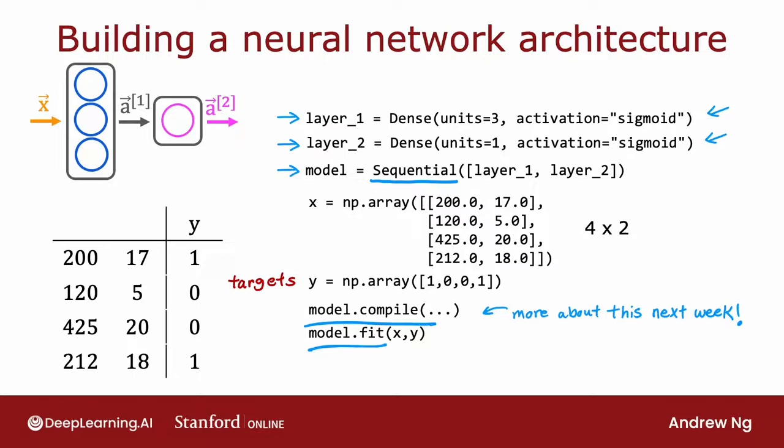And then finally, how do you do inference on this neural network? How do you do forward prop? If you have a new example, say x_new, which is np.array with these two features, then to carry out forward prop, instead of having to do it one layer at a time yourself, you just have to call model.predict on x_new, and this will output the corresponding value of a2 for you, given this input value of x. So model.predict carries out forward propagation or carries out inference for you using this neural network that you compiled using the sequential function.